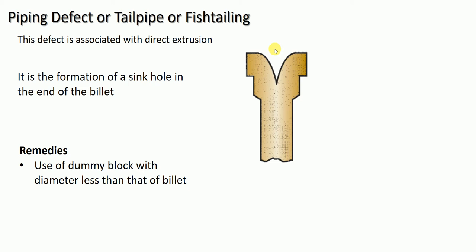Here we can see that this sinkhole at the end of the billet is nothing but the piping defect. Piping defect can be avoided by using a dummy block with a diameter less than that of the billet.